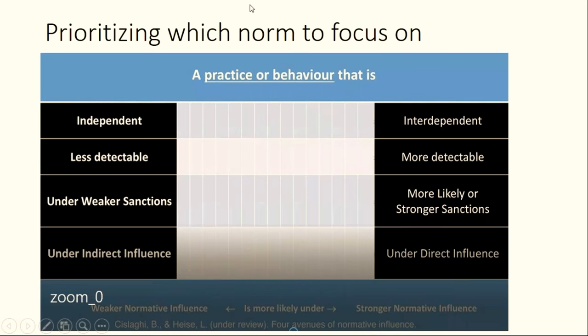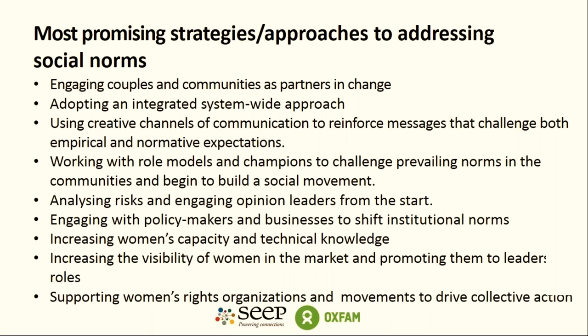On the next slide, you can see that spectrum I described. Depending on the norm and how strong it is, you'll be able to identify its strength based on these four characteristics. This analysis can help identify which norms are the best to target for change — either prioritizing those with the strongest influence or those most deeply held that can therefore yield the most impact in terms of creating change.